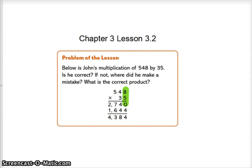Below is John's multiplication problem of 548 by 35. Is he correct? If not, where did he make a mistake? What is the correct product?